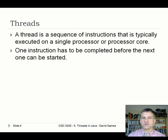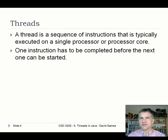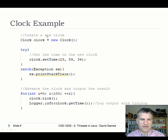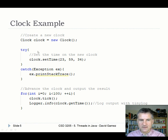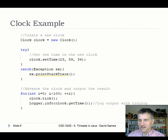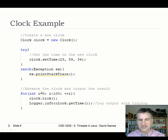A thread is a sequence of instructions executed on a single processor or processor core. The key thing about a thread is that the sequence is deterministic — one instruction is executed, then the second, and the second always comes after the first, and the third comes after the second. So one instruction completes and then the next starts. Looking at a bit of code: creating a clock, setting the time, exception handling, a loop ticking the clock — this is what happens within a single thread. One thing is executed after another; you can't do the ticking until you've set the time.